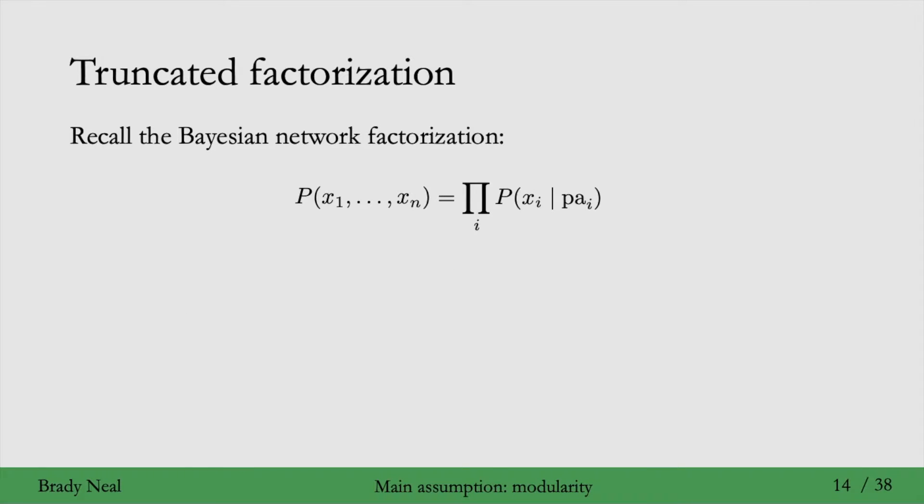One immediate consequence of the modularity assumption that's very useful is the truncated factorization. So first recall the Bayesian network factorization, which says that we can factorize the joint distribution as the product over i of factors, which are p of xi given the parents of xi.